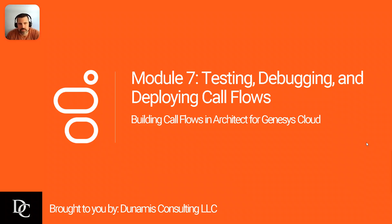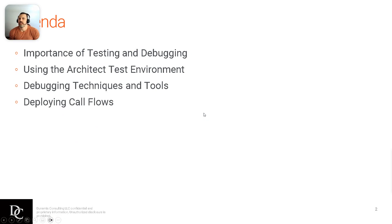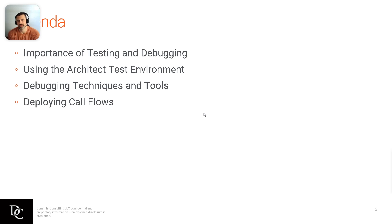Hey all, welcome to Module 7: Testing, Debugging, and Deploying Call Flows. The agenda here covers testing and debugging, using the Architect testing environment — which isn't much different from using a production environment, just in a dev or testing phase — debugging techniques and tools, and then deploying those call flows.